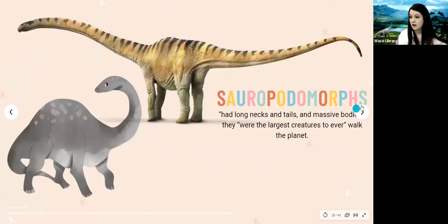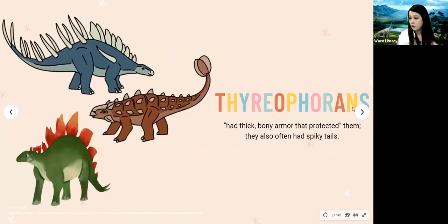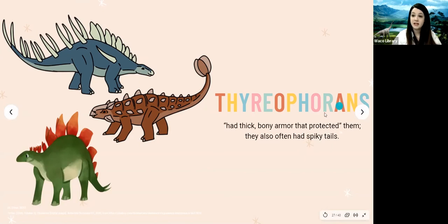Then we have Sauropoda. The sauropodomorphs had really long necks and tails and massive bodies — they were the largest creatures to ever walk the planet. Next we have Thyreophora. Thyreophorans had really thick bony armor that protected them, and they also had spiky tails and spikes on their bodies, with sharp heavy tails that helped protect them.